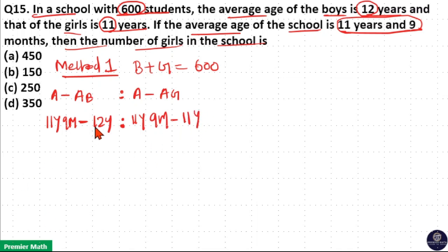Now, difference between this is minus 3 months because 12 years minus 11 years is 1 year, 1 year minus 9 months is 3 months. So, minus 3 months. Here, 11 years 9 months minus 11 years is 9 months.